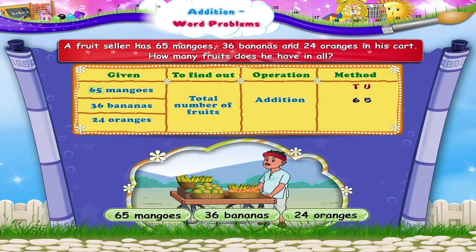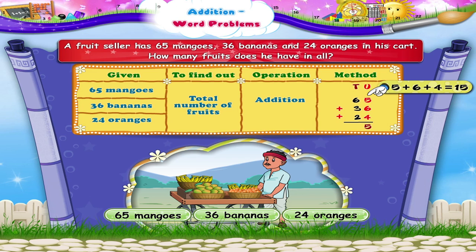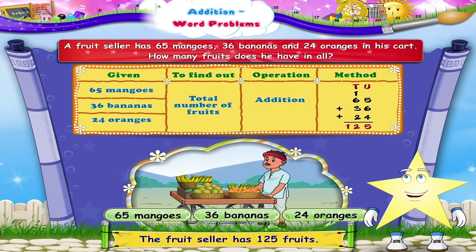So let's add 65 plus 36 plus 24. On adding digits in the units place, we get 5 plus 6 plus 4 equals 15 units. Carrying one 10 to the 10s column, let's add the digits in the 10s place: 6 tens plus 3 tens plus 2 tens plus 1 equals 12 tens. So Stari, the fruit seller has 125 fruits.